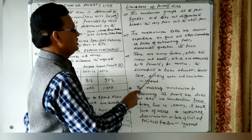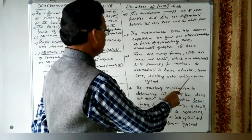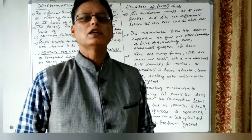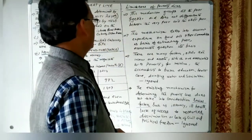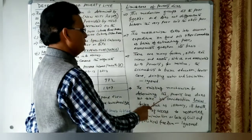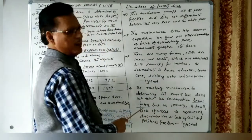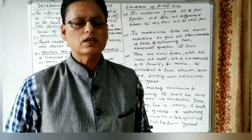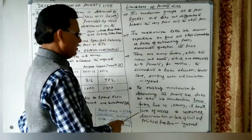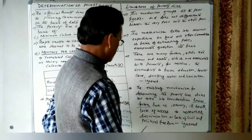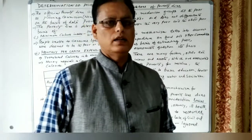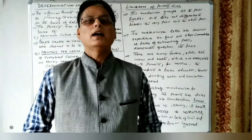The third limitation is that there are many factors other than income and assets associated with poverty — for instance, accessibility to basic education, healthcare, drinking water, and sanitation — which are ignored in poverty estimation. The fourth limitation is that the existing mechanism does not take into consideration social factors such as illiteracy, ill health, lack of access to resources, discrimination, or lack of civil and political freedom.